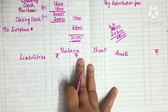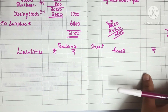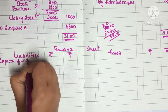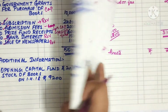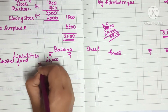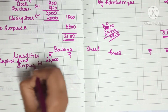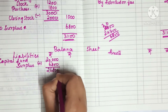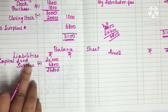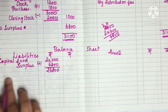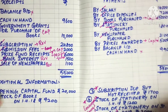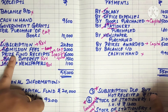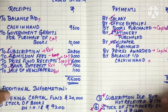Now let's see what we need to do for the balance sheet. We need to put in the capital fund and the adjustment amounts. The capital fund adjustment is 20,000. We need to apply the subscription amount: subscription is 6800. So 6800 is entered here with the adjustments. Next we go to the assets side. Government grants come next, followed by the price fund.